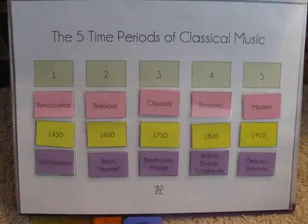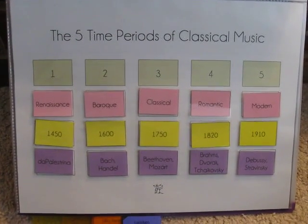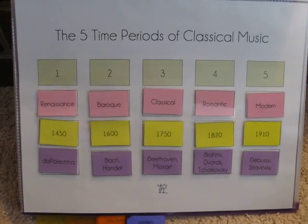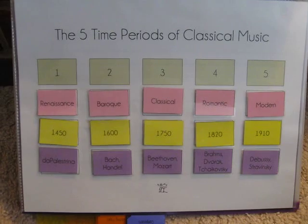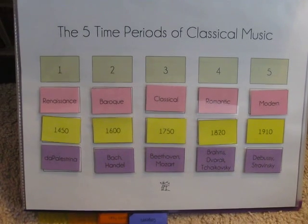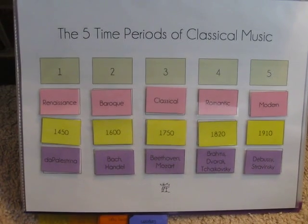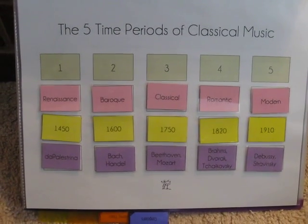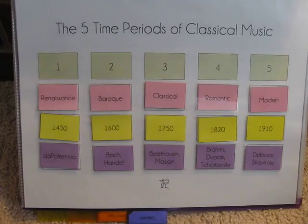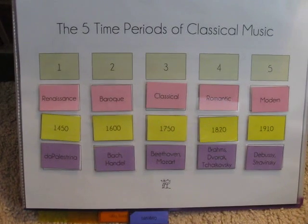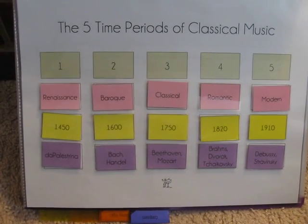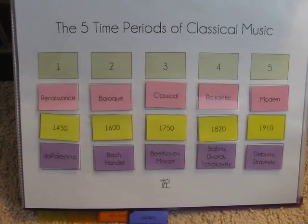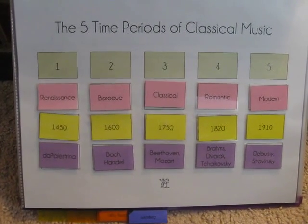The five time periods of classical music. The first is called Renaissance, circa 1450. The second is called Baroque, circa 1600. The third is called Classical, circa 1750.